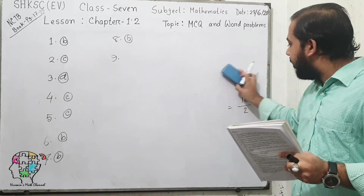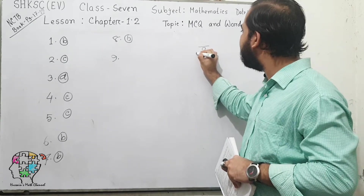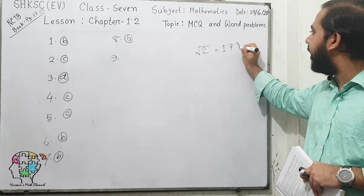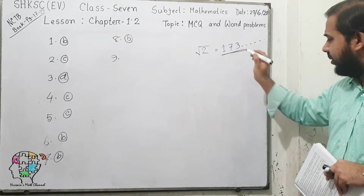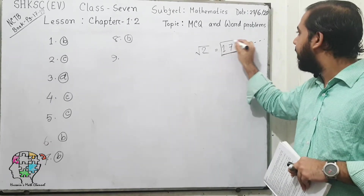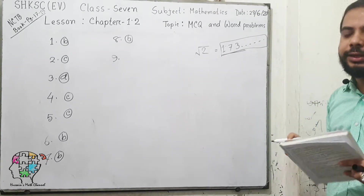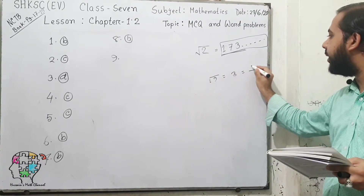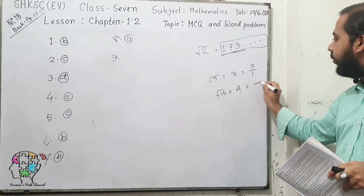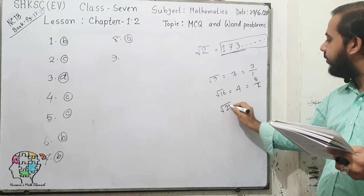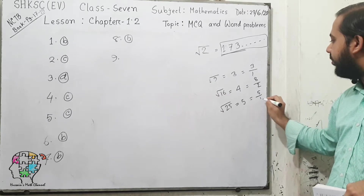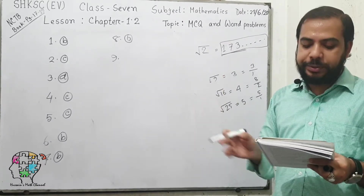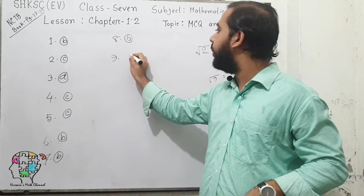Examples of irrational numbers include root over 2. If you calculate it, you get 1.73 and unlimited digits after the decimal, and this value cannot be written in any rational format. On the other hand, root over 9 can be written as 3, root over 16 can be written as 4, and root over 25 equals 5 — all rational. So among the options in question 9, all can be written in rational form except root over 2. So the answer is option A.